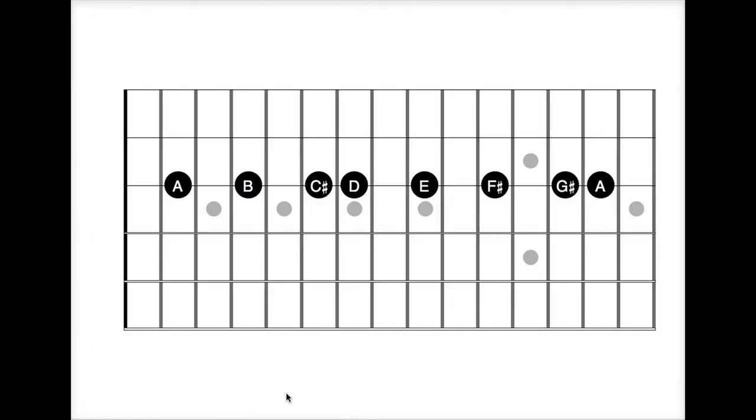So that was what we would call a parallel key. You could also say that if you have a song that starts in the key of A minor, and then it changes in the chorus to A major, you would not call that a key change. You would actually call that a mode change. You're changing from the minor mode to the major mode.